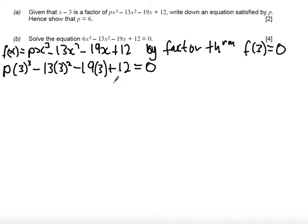So let's tidy up these terms, 3 cubed is 27 so I get 27p minus 3 squared is 9 times 13 is 117. 19 times 3 is 57 so minus 57, and then plus 12 equal to 0.